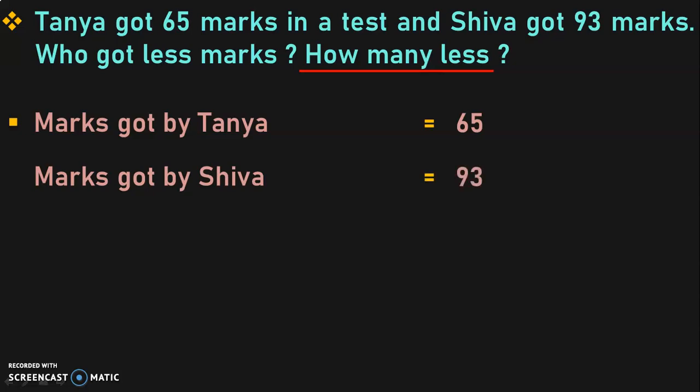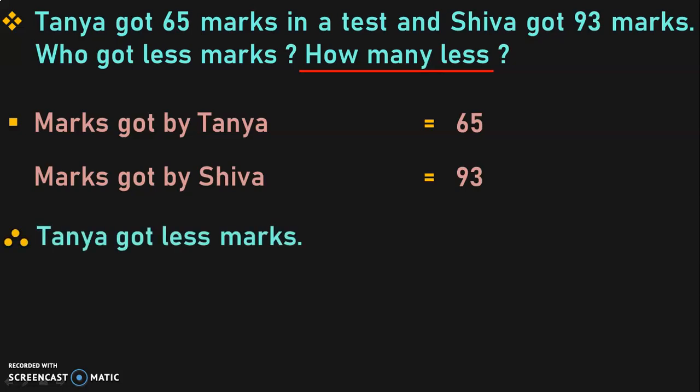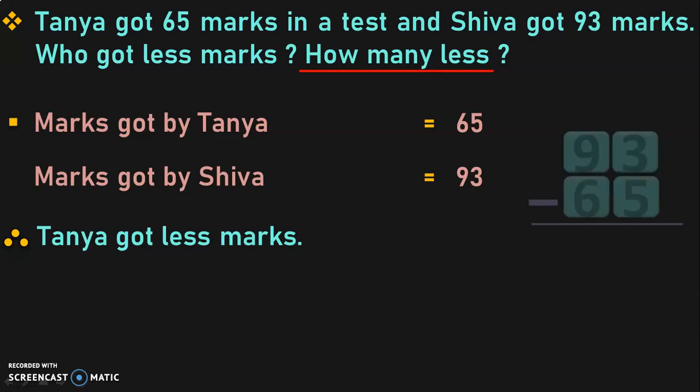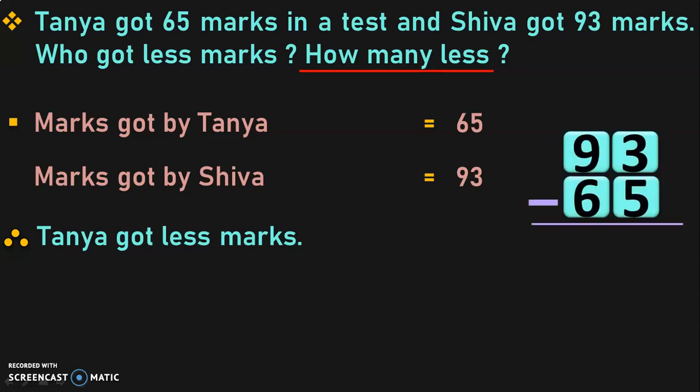Who got less marks? Now we have to do a comparison of the two two-digit numbers. Comparing the tens place, it is 6 and 9. We know that 6 is lesser than 9, so we can conclude 65 is lesser than 93, which means Tanya got less marks. How many less? To find out how many marks less, we subtract the mark obtained by Shiva minus the mark obtained by Tanya — that is 93 minus 65.